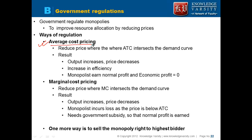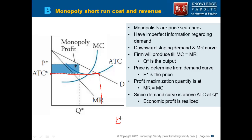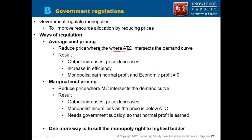One way is average cost pricing — the government says you should charge a price equal to your average total cost. The price is reduced to where the average total cost intersects the demand curve. At this price, quantity is higher. The firm is willing to supply, but its economic profit will be zero, since profit equals quantity times price minus average total cost, and when price equals ATC, economic profit is zero. The firm earns some accounting profit but no economic profit.